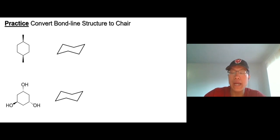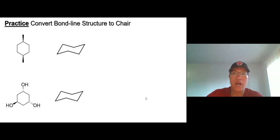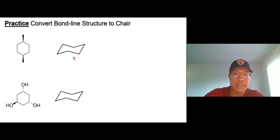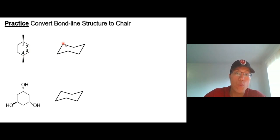It's always helpful to number the carbons because it keeps you on track — which carbon compared to which carbon. What you have to do is convert the bond-line structure on the left side to the chair on the right side. I'm going to number the carbons here: one, two, three, and four. You can put one anywhere, but I usually start from the edge on the right side: one, two, three, and four.